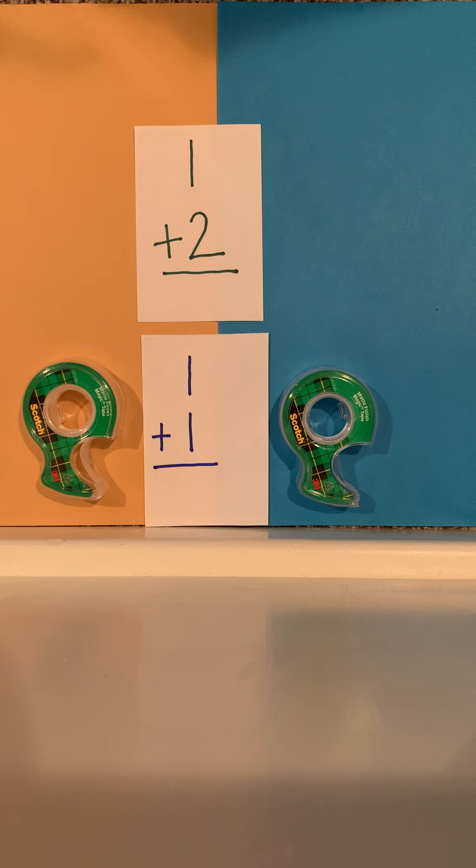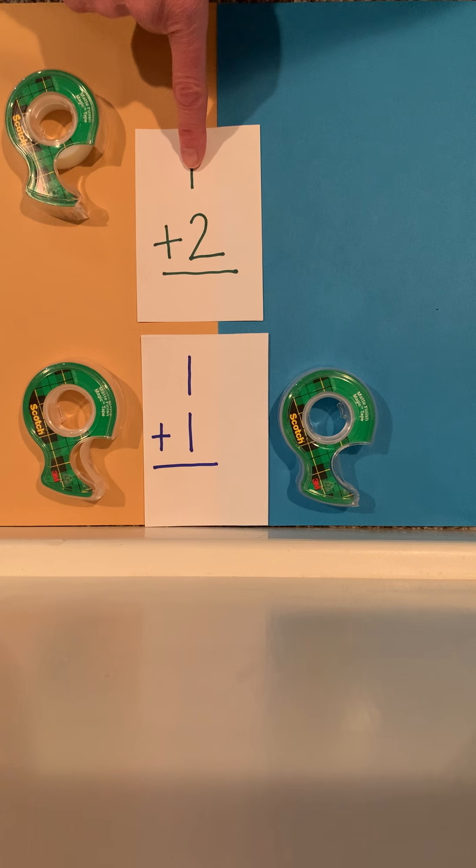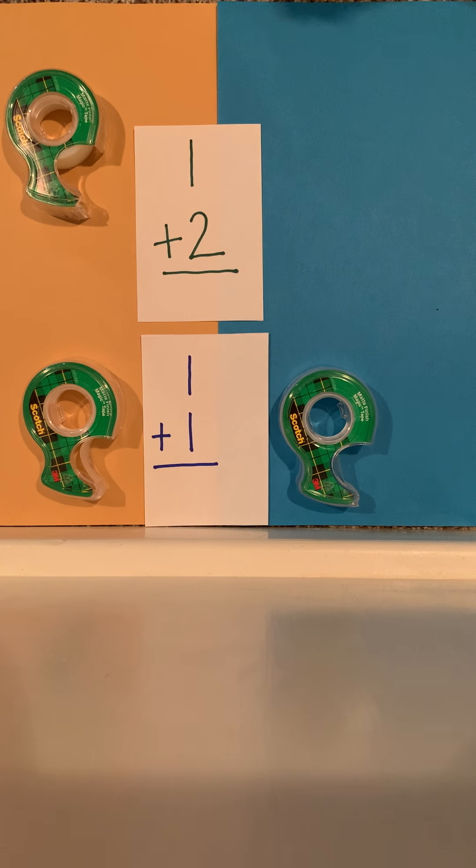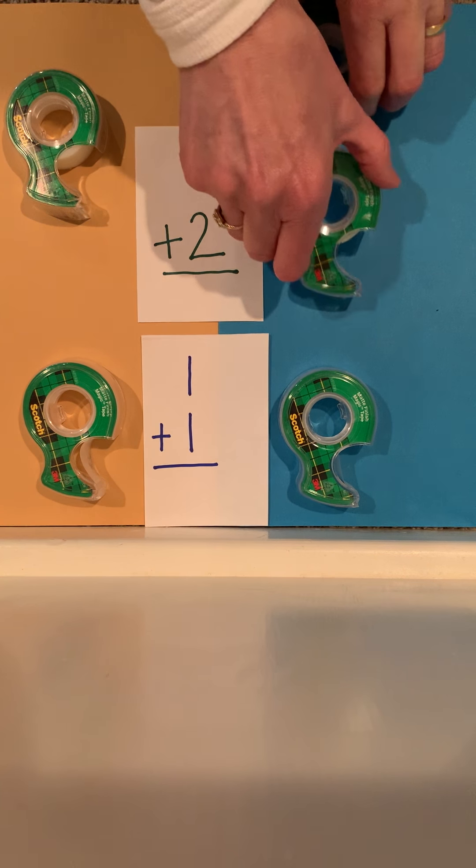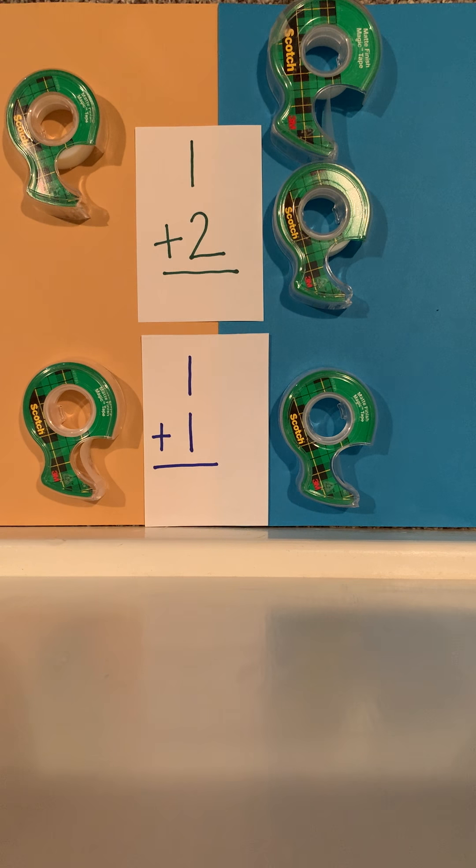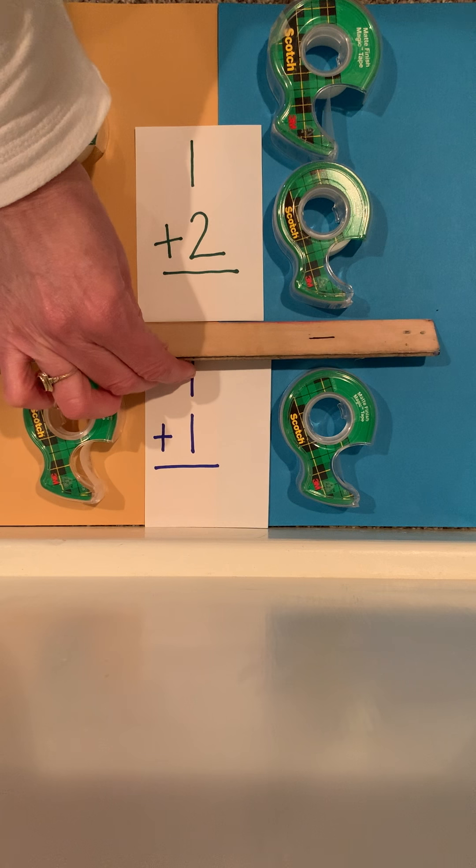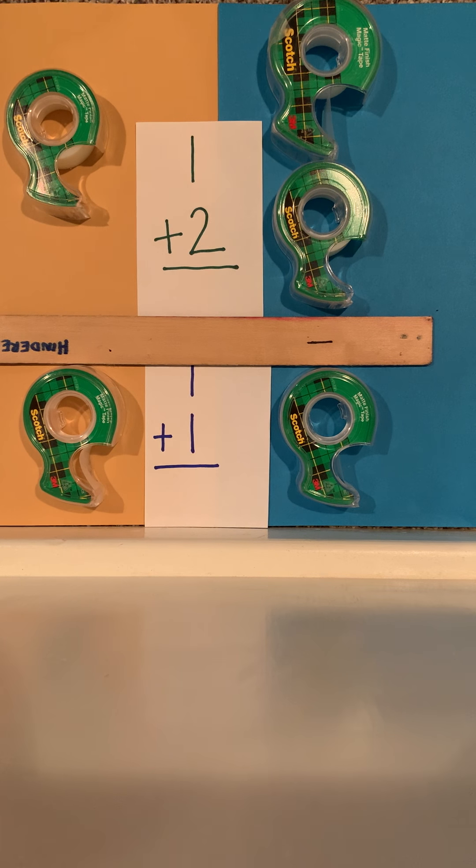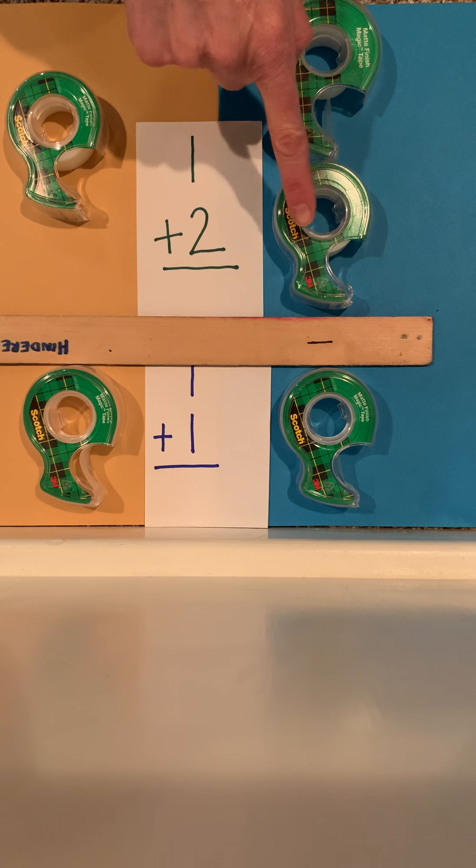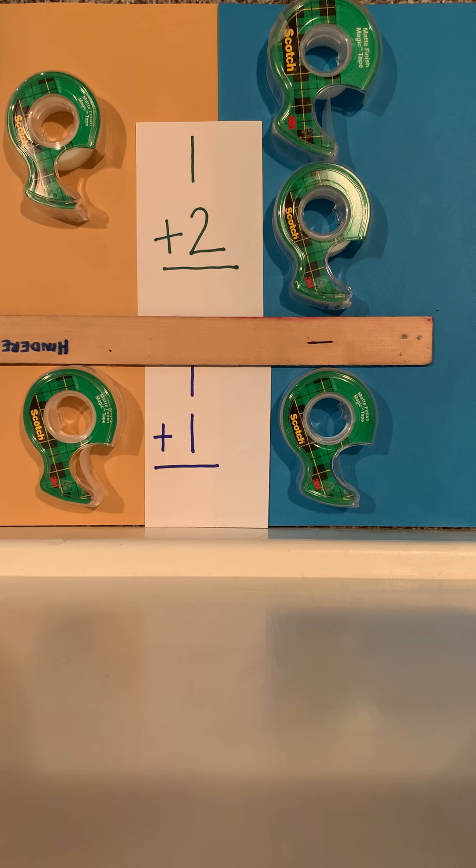So let's look and see what this would look like. So if we have 1 on this side and 2 on this side, how many do I have all together? 1, 2, 3. So 1 plus 2 more equals 3.